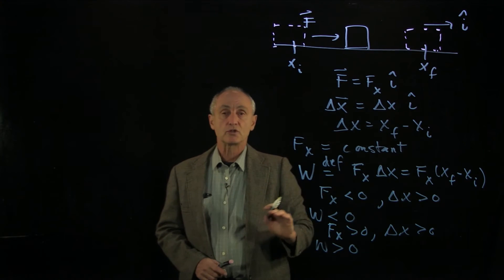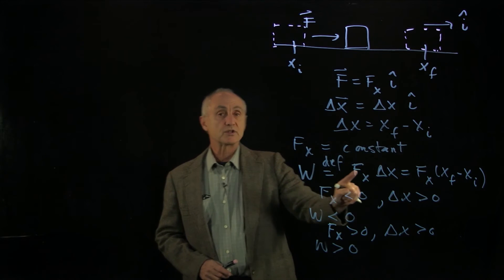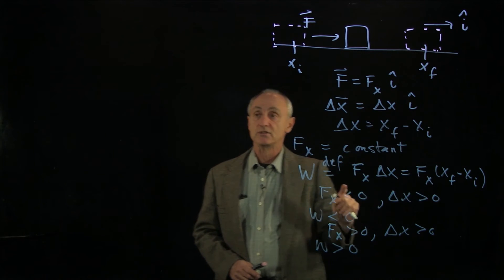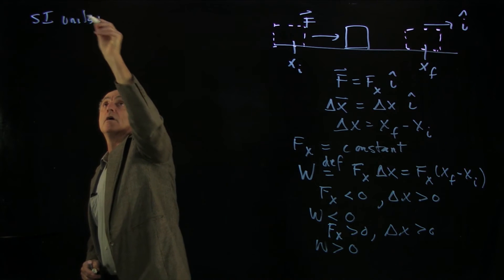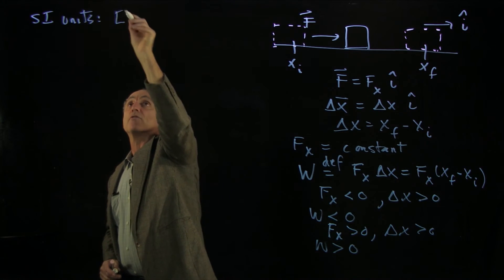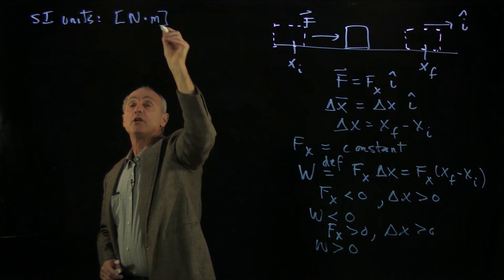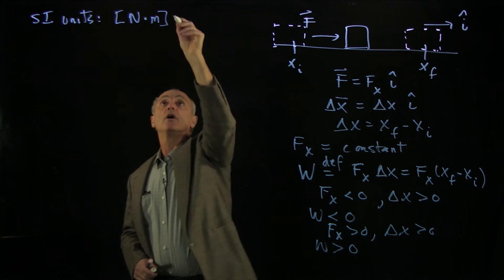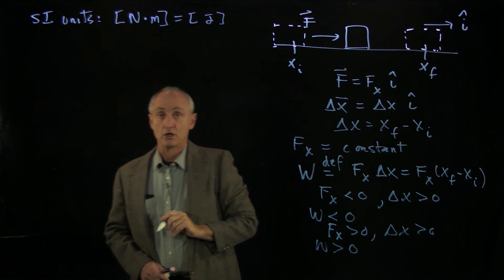Now whenever we introduce a new quantity, we always have to be a little bit careful about the units. Since work is the product of force and distance, then our SI units for work are the units of force, which are newtons, times the units of distance, meters. And we call this a joule. So one joule is equal to one newton meter.